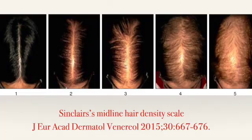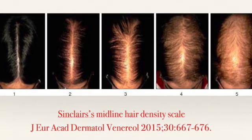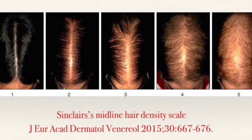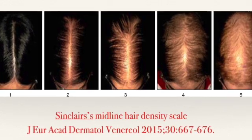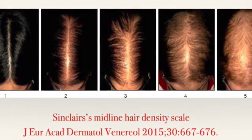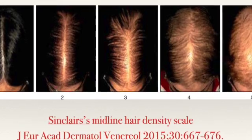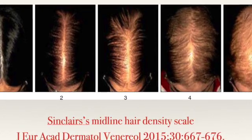To make it more objective, Dr. Sinclair from Australia has proposed a classification where 2 to 3 is classed as moderate severity and 4 to 5 as advanced hair loss. This is called Sinclair's midline hair density scale.